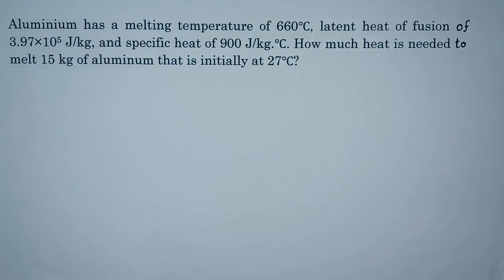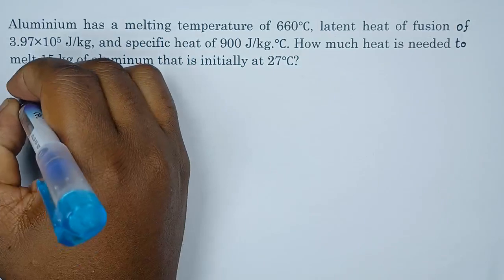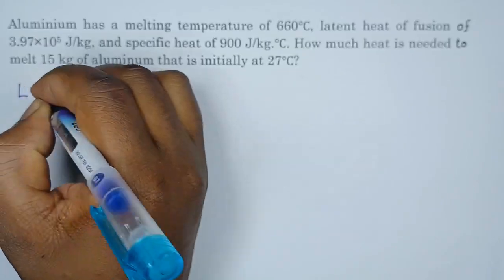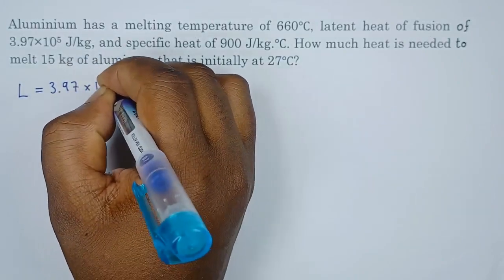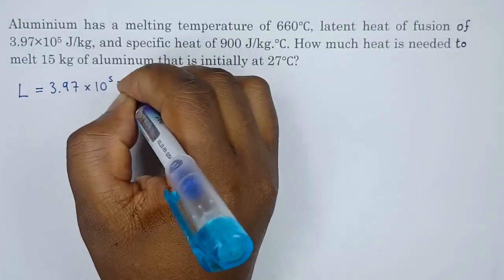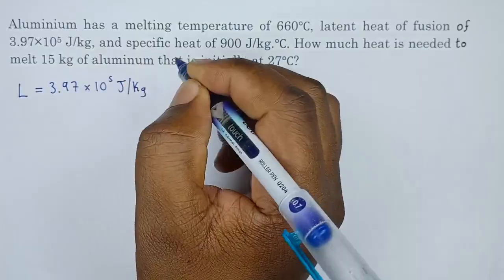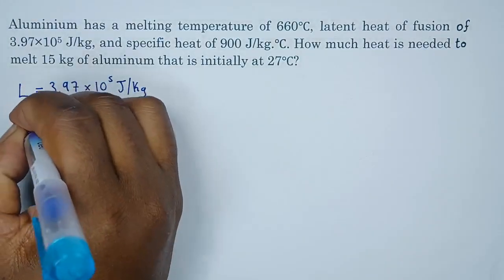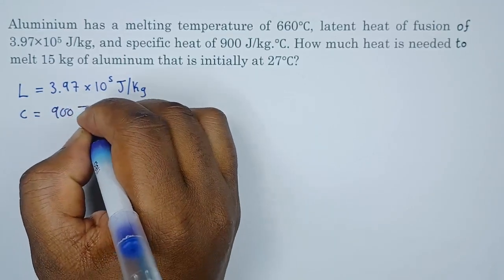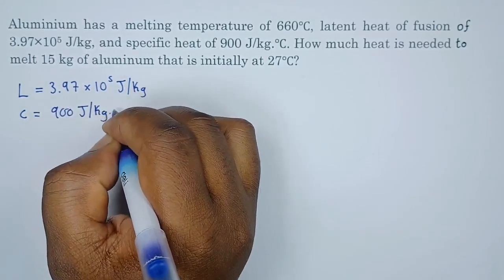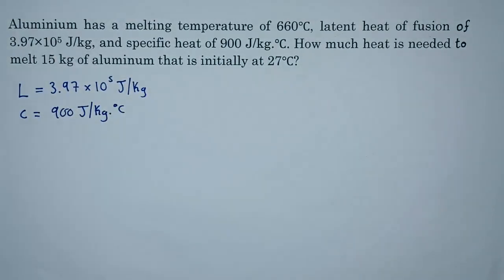So this is how we can do it. Let's see what we've been given. The latent heat L, we've been given 3.97 times 10 to the power 5 joules per kg. The specific heat c, we've been given 900 joules per kg per degree Celsius. What else do we have? We have the mass which is 15 kg.